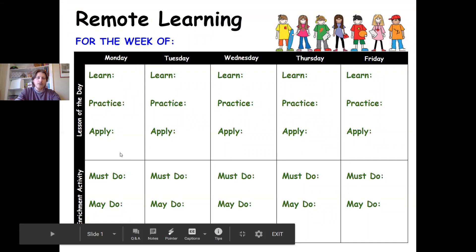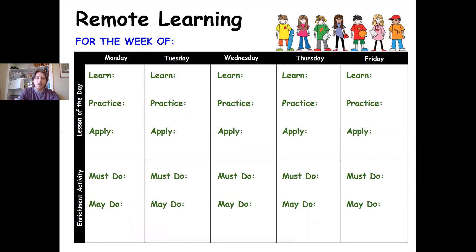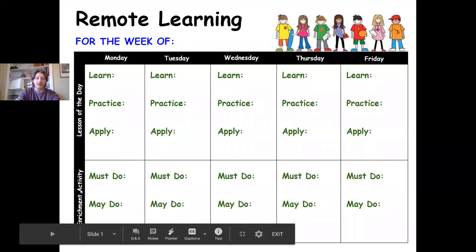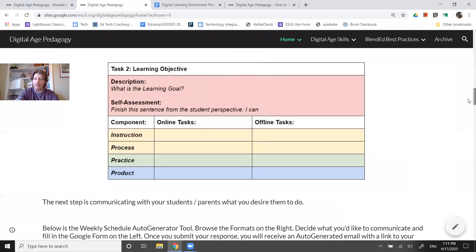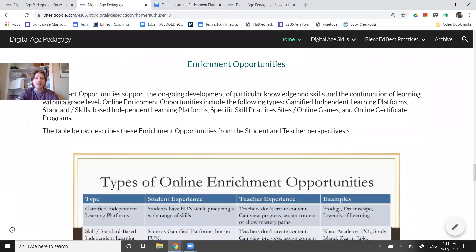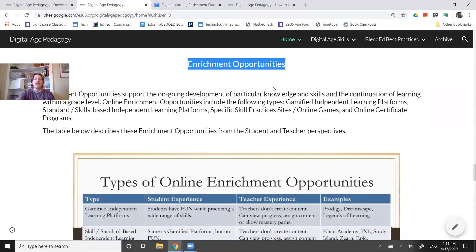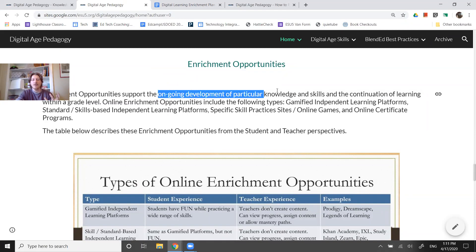It looks very similar but with an eye on engaging students in one educational opportunity on a given day and then giving students some choice around an enrichment activity. Potentially you identify one required thing, but now students have some options around what those may-dos might be, potentially organized like a choice board. When we talk about enrichment activities, these are different from educational opportunities — the Department of Education defines them as that ongoing development of a particular knowledge or skill in the continuum of learning within a grade.